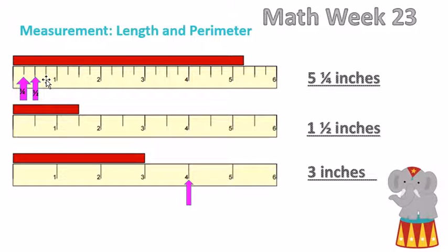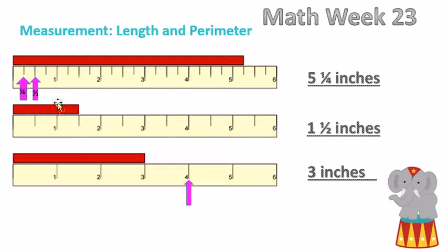Once you get to three quarters, the next quarter over is four quarters, which is a whole and takes you to an inch. When you see the small space it's one quarter. When you skip to halfway between one whole number and another it's a half — like here where this red stripe comes past the one and over to halfway between the one and the two.